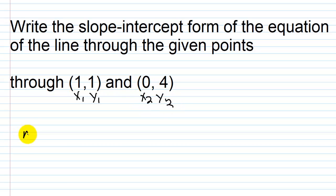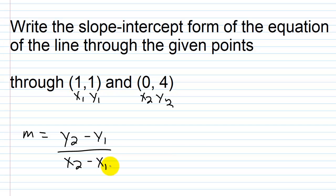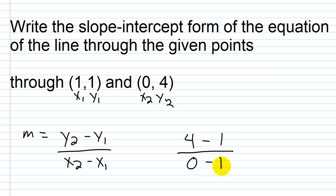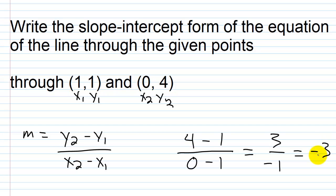Our slope is y₂ minus y₁ over x₂ minus x₁. So our slope is y₂, which is 4, minus y₁, which is 1, over x₂, which is 0, minus x₁, which is 1. So 4 minus 1 is 3, over 0 minus 1, which is negative 1. This gives us a slope of negative 3, or negative 3 over 1.